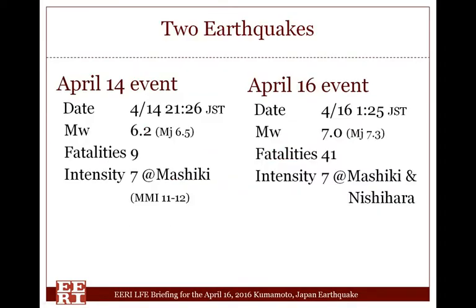This earthquake is actually a sequence of two earthquakes. The first earthquake occurred on April 14th at 9 p.m. Japan Standard Time. The moment magnitude was 6.2, and 9 people died. The maximum JMA seismic intensity was recorded as 7 in Mashiki town, which corresponds to 11 to 12 in the Modified Mercalli intensity scale.